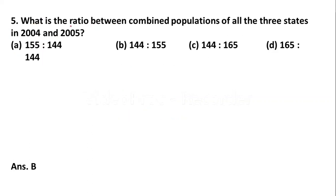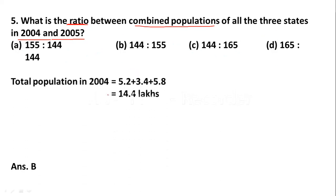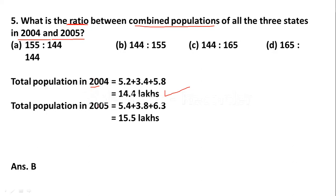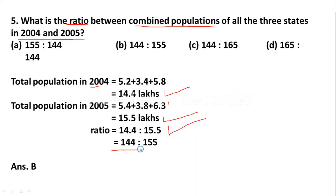Question 5: What is the ratio between the combined population of all 3 states in 2004 and 2005? Total population in 2004: State A 5.2, State B 3.4, State C 5.8 = 14.4 lakhs. Total population in 2005: State A 5.4, State B 3.8, State C 6.3 = 15.5 lakhs. Ratio of 2004 to 2005 is 14.4 : 15.5, written as 144 : 155. Option B is the correct answer.